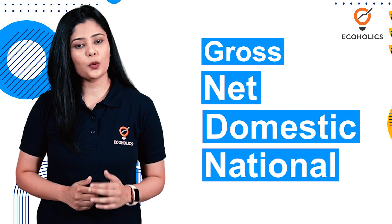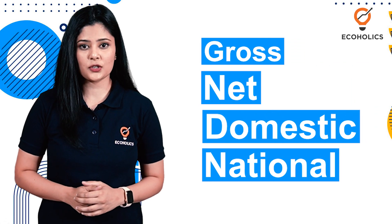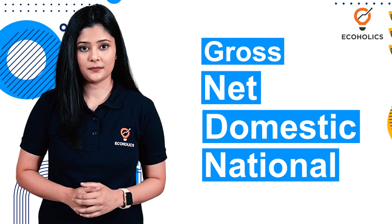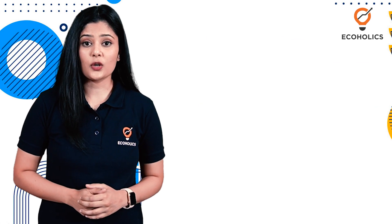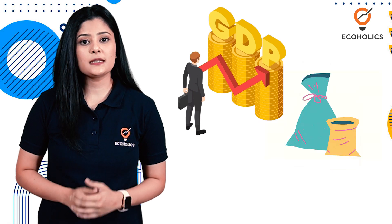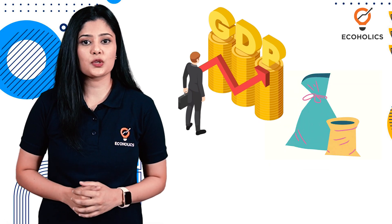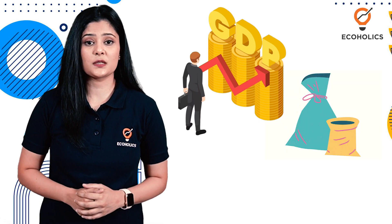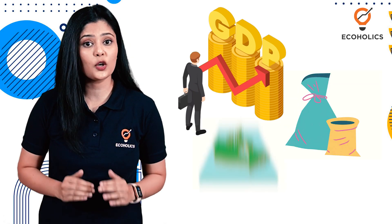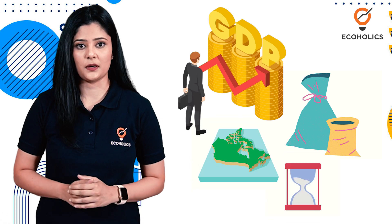Now, using these four terms, we can understand the popular definitions of national income. Gross Domestic Product, or GDP, is the total market value of all the finished goods and services produced within a domestic territory in a specific time period.